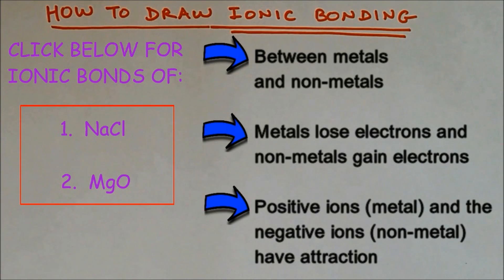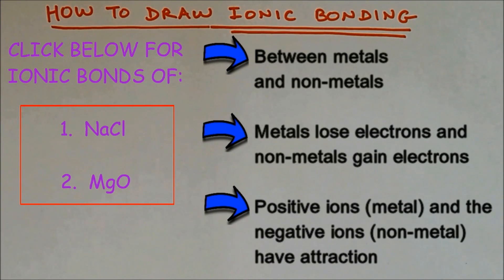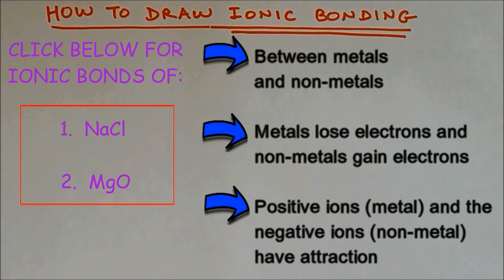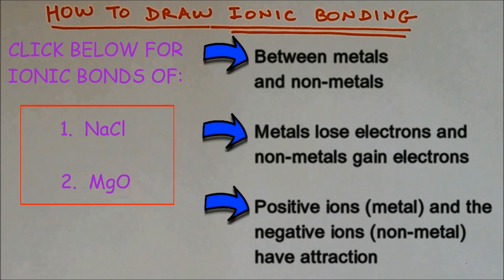When the metal loses electrons, it becomes a positive ion. Whereas the non-metal atoms become a negative ion. This positive and negative ion have attraction, and this attraction is called ionic bonding.